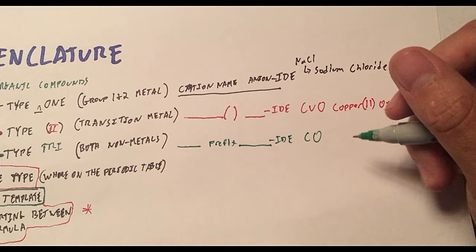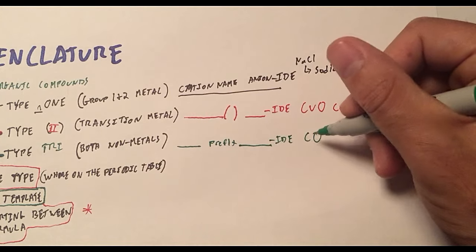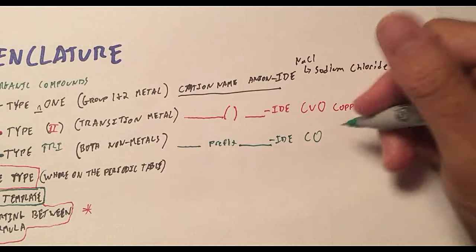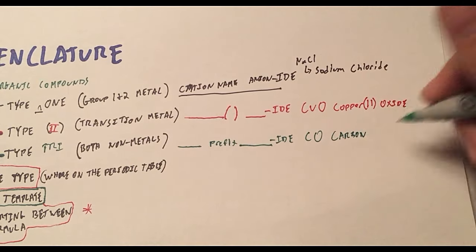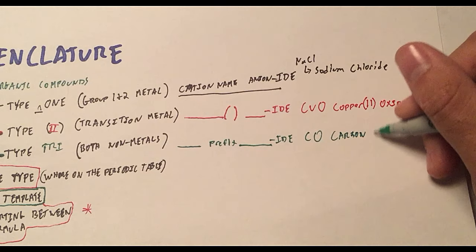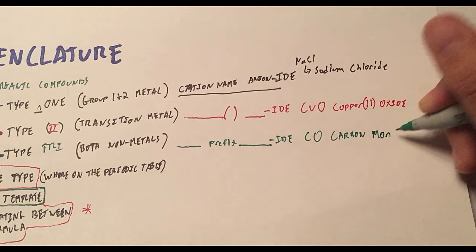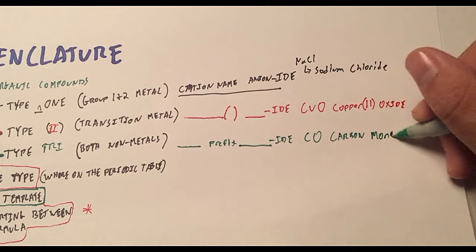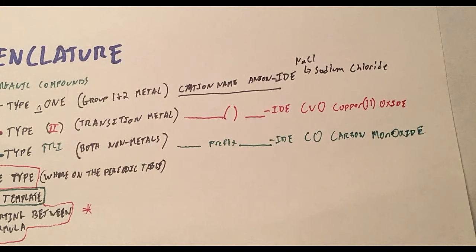Have I been saying copper this whole time? Carbon. Carbon monoxide. So we have carbon, that's the first atom. Carbon monoxide. Mono is the prefix for one. There's only one oxygen there. Therefore, carbon monoxide is carbon monoxide. Now you know it's Type Tri when you have to deal with two elements that are both in this group.